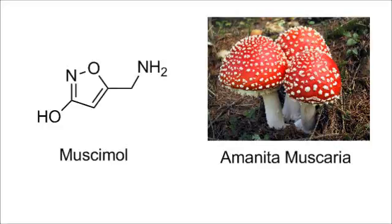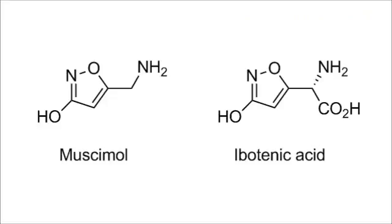Muscimol is the principal psychoactive component in Amanita muscaria mushrooms. Ibotenic acid can also serve as a prodrug via decarboxylation.